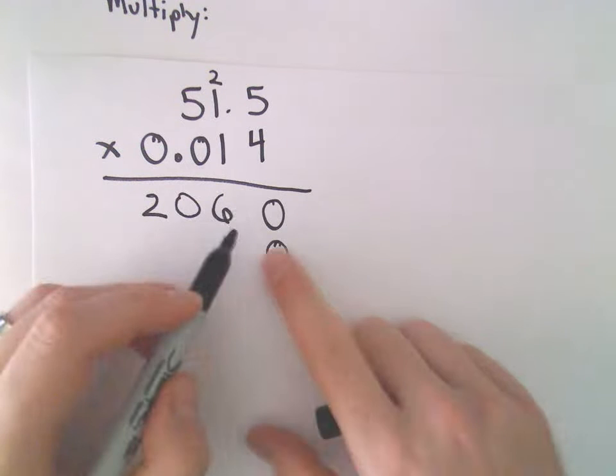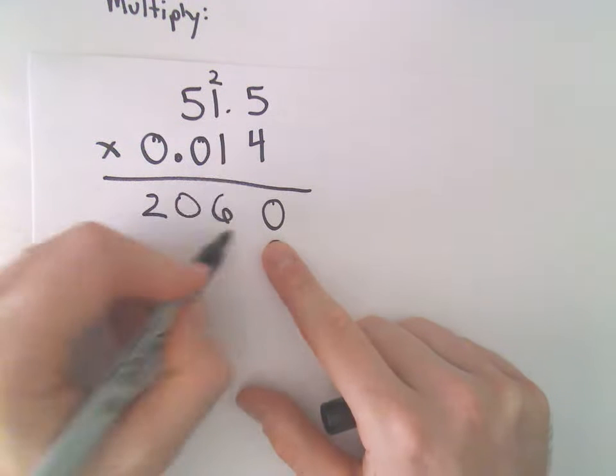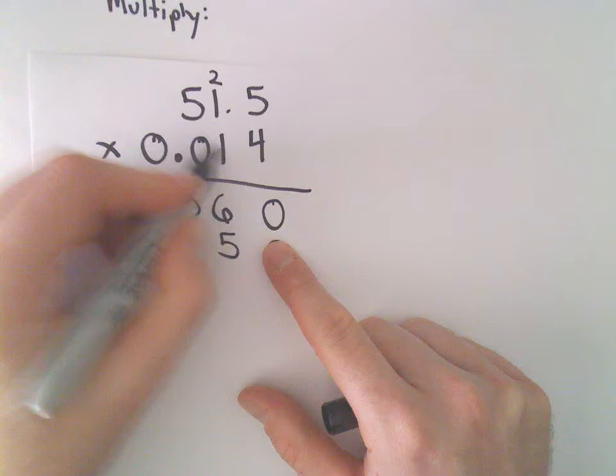I'm going to add my 0, and then 1 times 5 is 5, 1 times 1 is 1, 1 times 5 is 5.